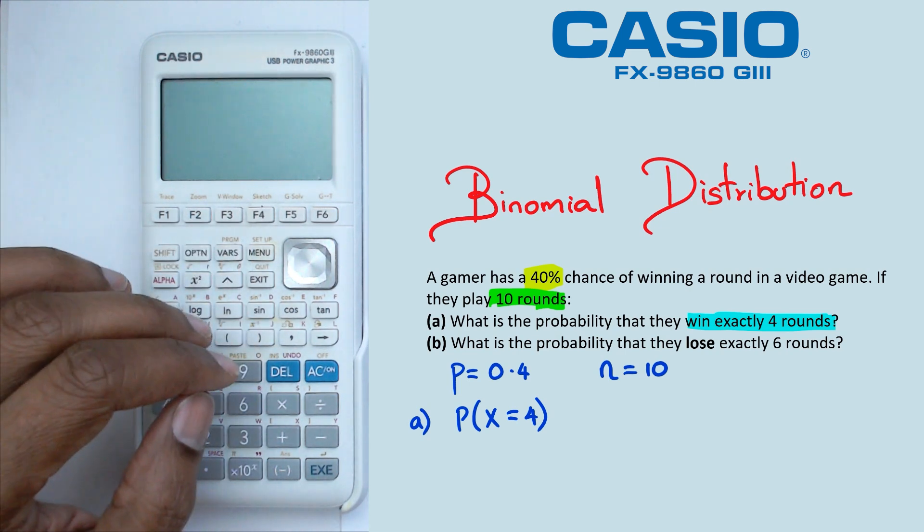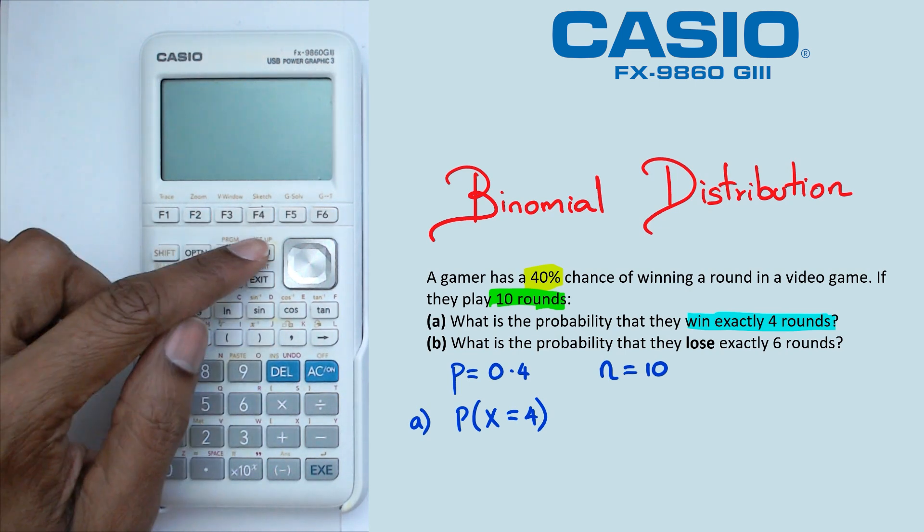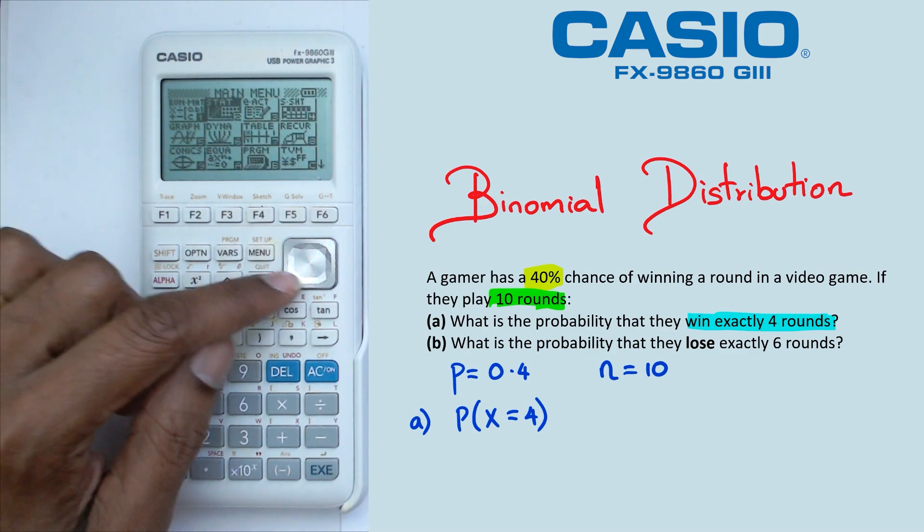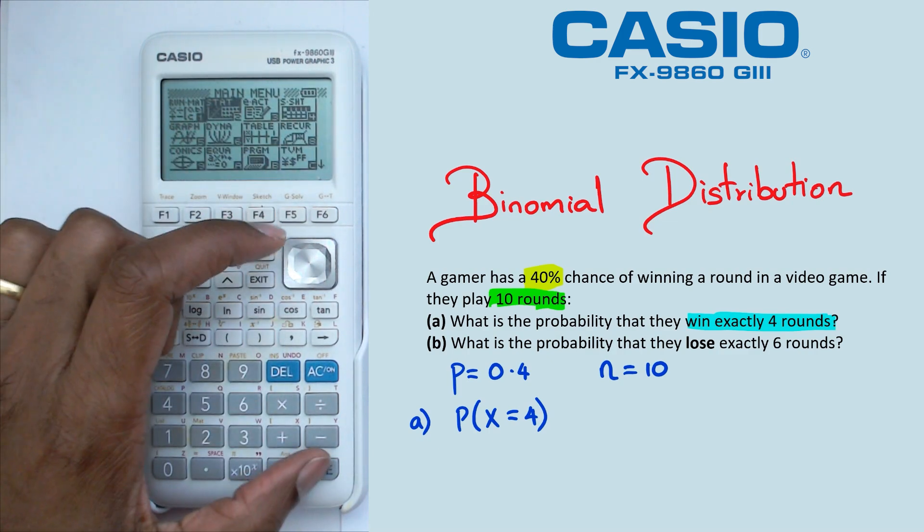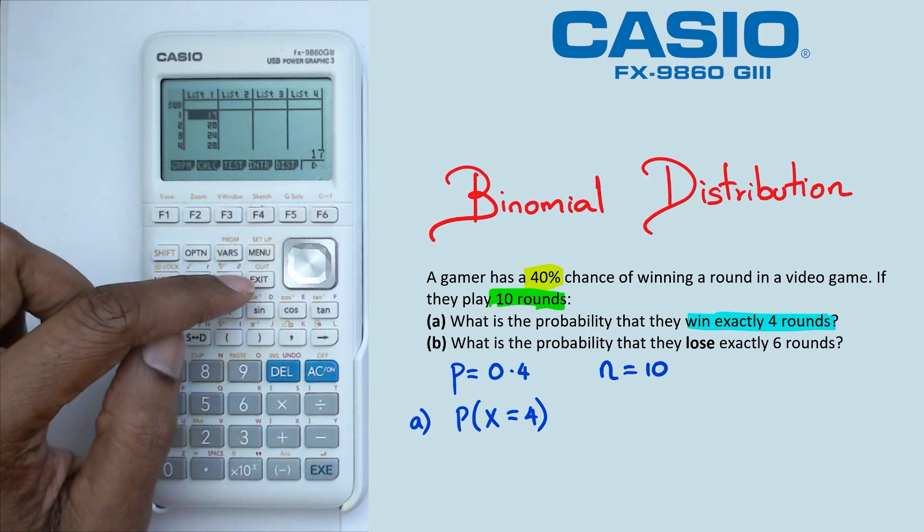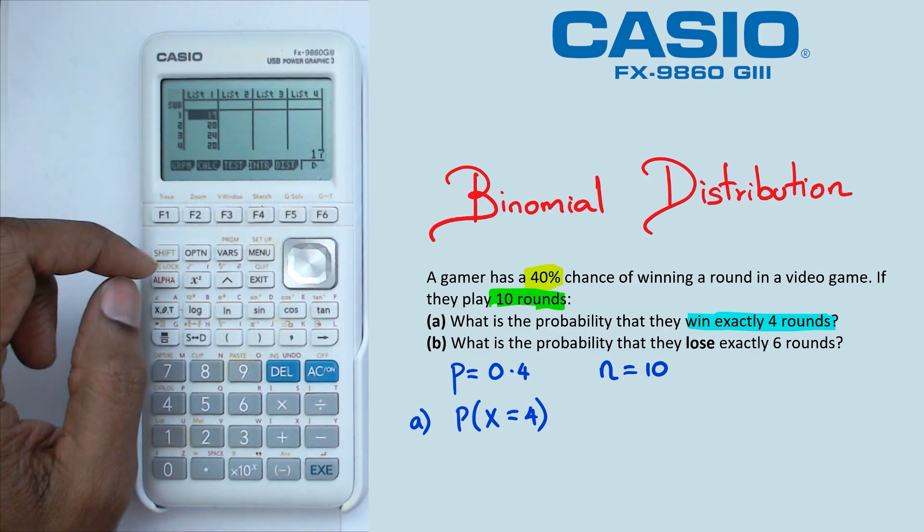So to do this on the graphics calculator, what we're going to do is click on menu, actually switching it on would help. Then we're going to click on menu, we're going to go into the stat mode. And I've done some work here before, so we're just going to exit and go all the way right to the beginning of the stat mode.